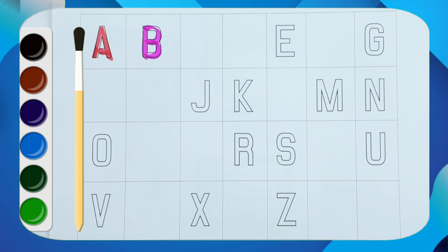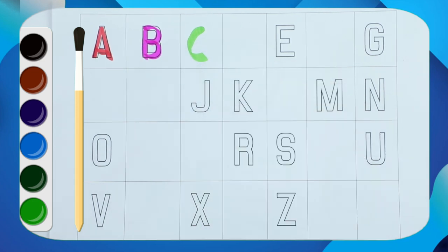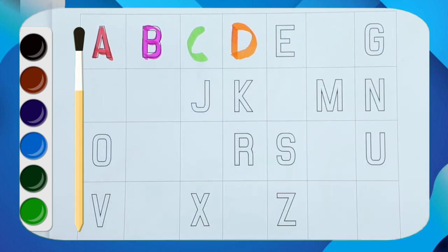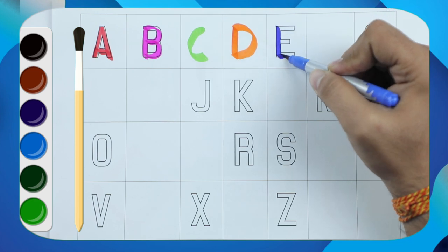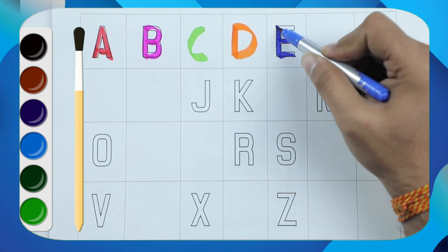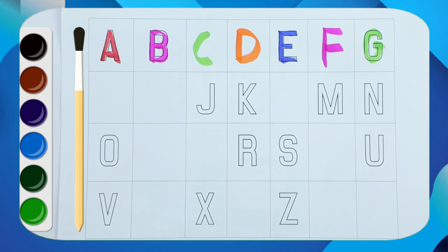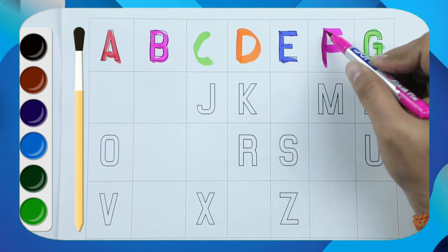Yes, it's C, C for cat. And next, D, D for dog. What's next? E, E for elephant. F, F for fish.